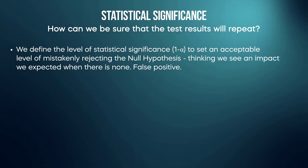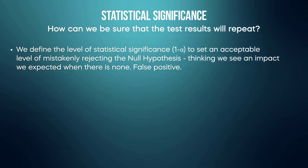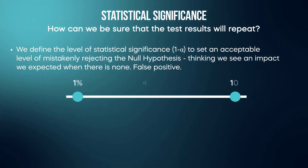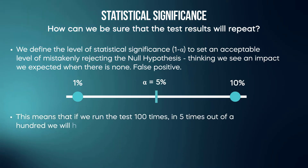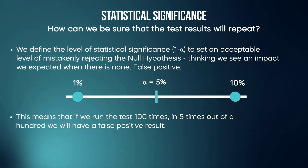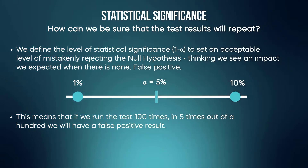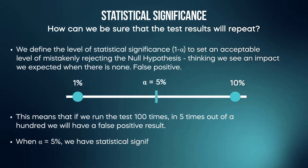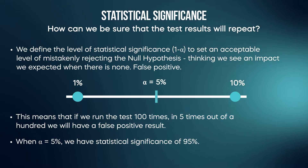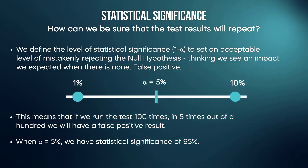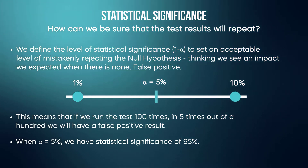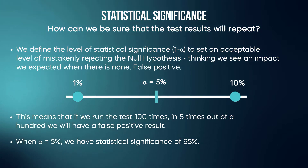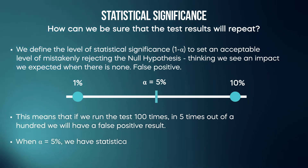Usually alpha is somewhere between 1 and 10 percent, with the most common value for digital experiments being alpha of 5 percent. This means that if we run the test 100 times, in 5 out of 100 we will have a false positive result. When alpha equals 5 percent, we have a statistical significance of 95 percent. Alpha is what we compare the p-value of the test to, but we will discuss that later in the A/B test analysis section.